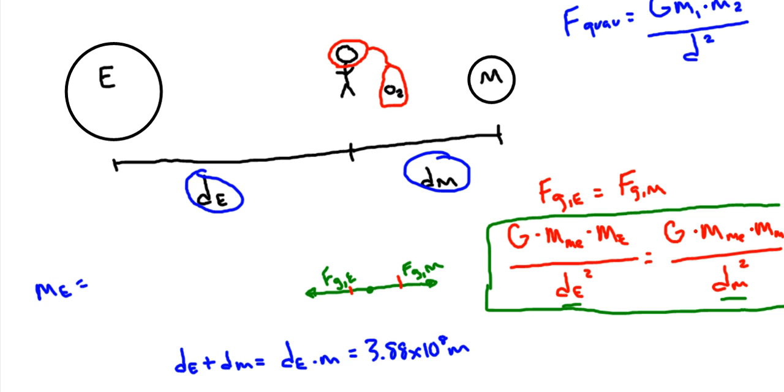A couple of other pieces of information from that sheet: the mass of the Earth is equal to 5.97 times 10 to the 24th kilograms, and the mass of the Moon is equal to 7.35 times 10 to the 22nd kilograms.